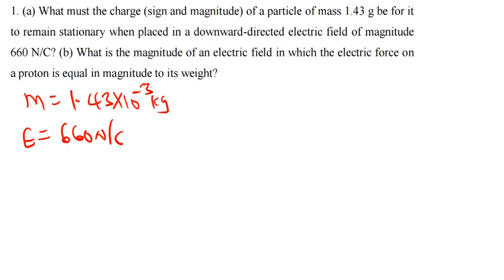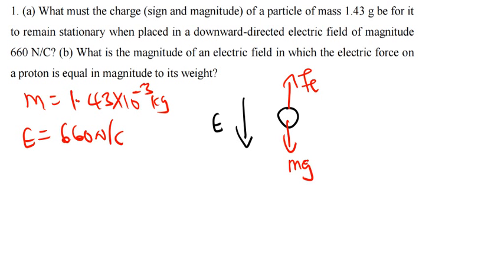The question is asking what the charge of the particle must be for it to remain stationary when placed in a downward direction electric field. The electric field is going downward. We have a charge here but we don't know the sign. Since it must be stationary, we remember that gravity is always pulling this object down. For it to remain stationary, the electric force has to act upward, so that mg and the electric force balance and the net force is zero.